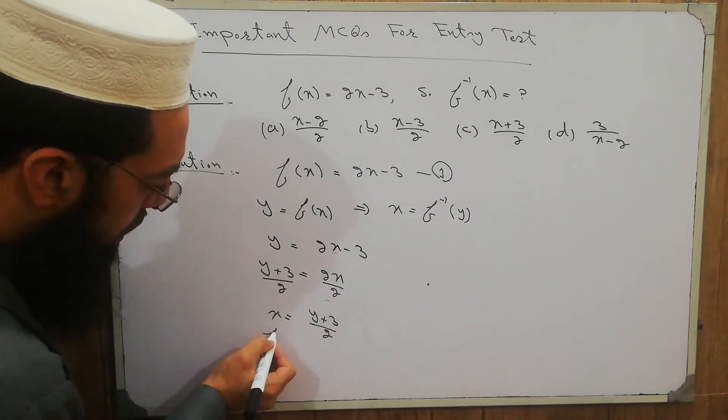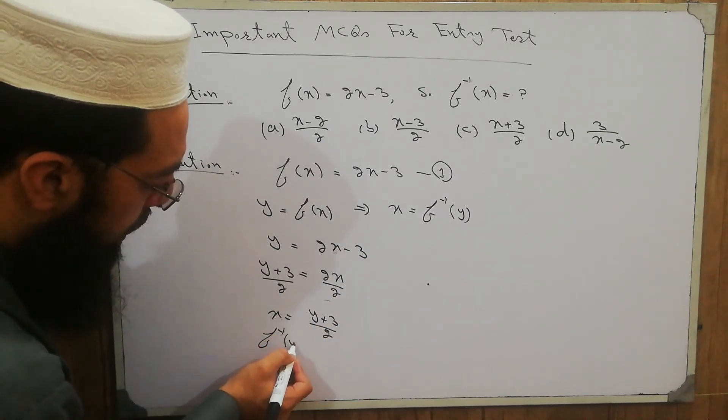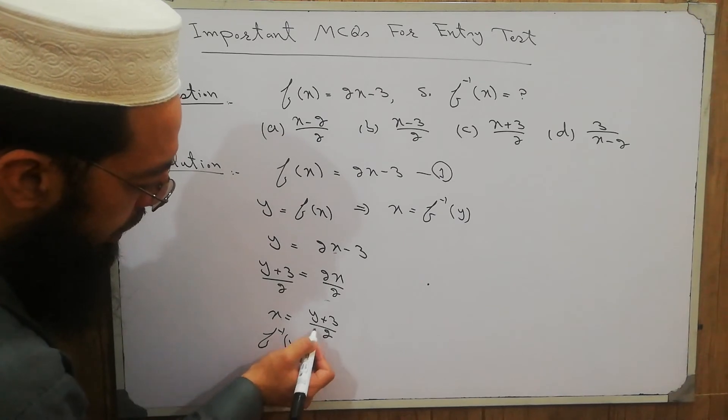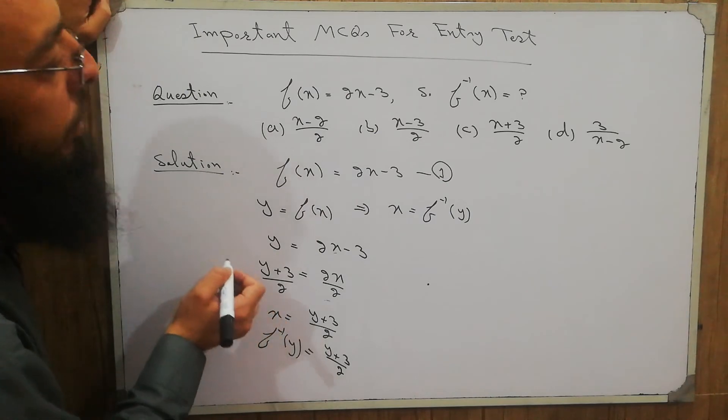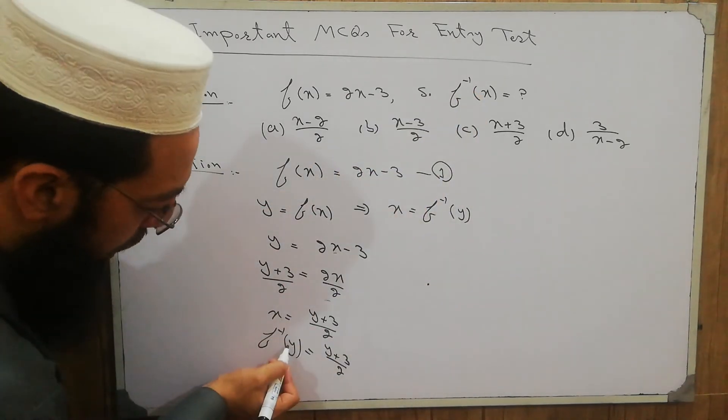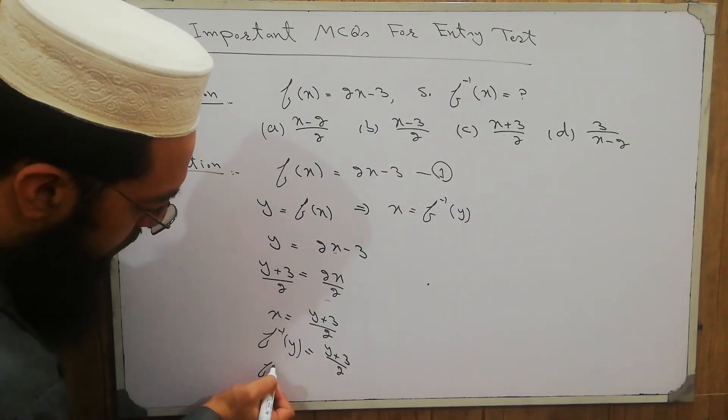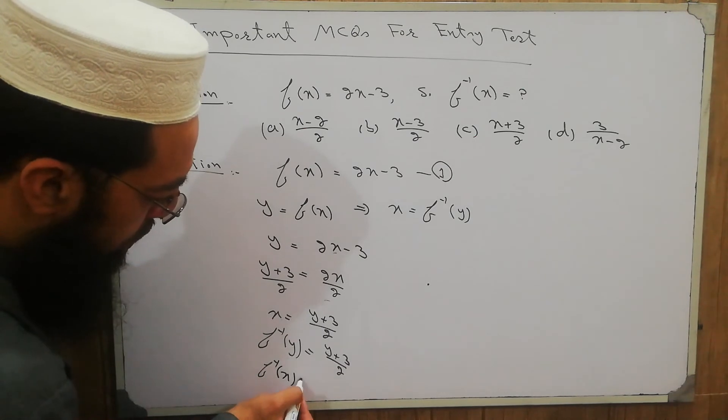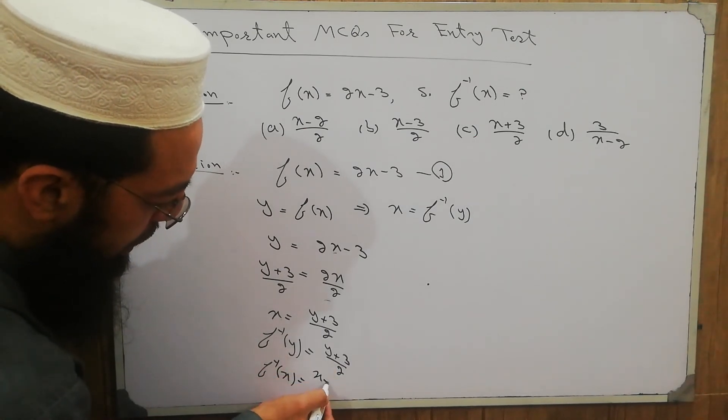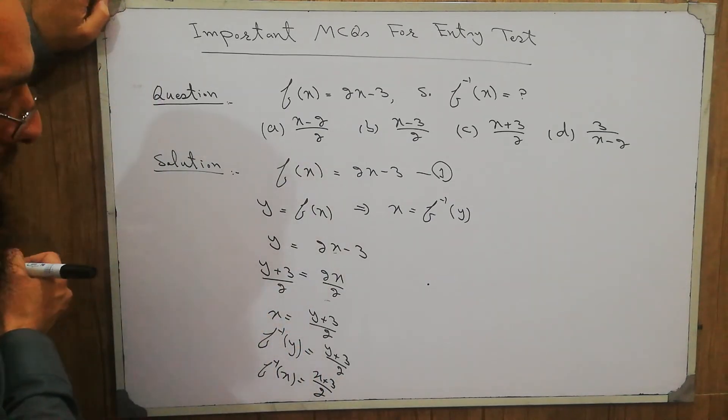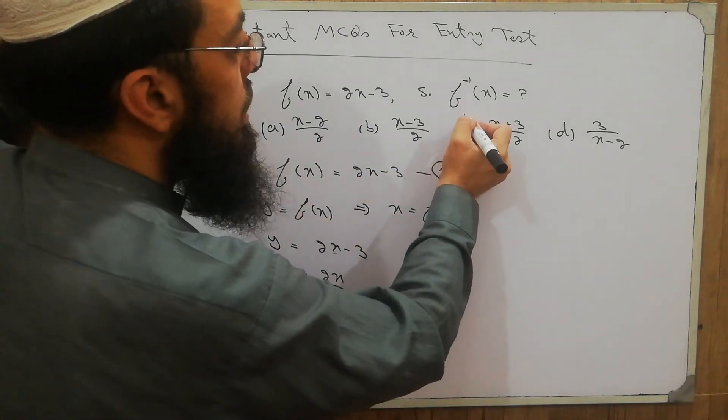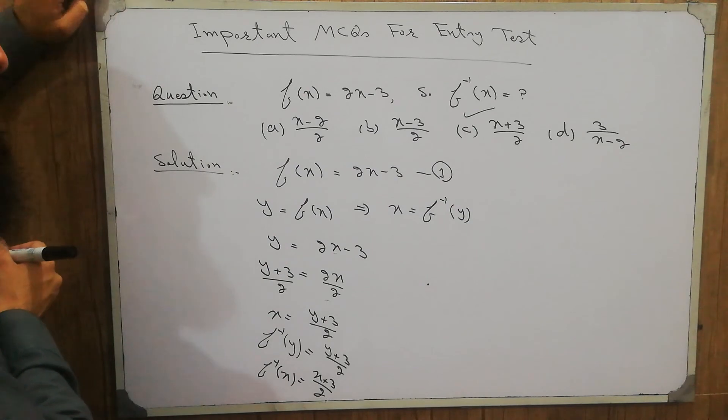So put f inverse of y equals y plus 3 divided by 2. But I need f inverse of x, so put here x. So f inverse of x equals x plus 3 divided by 2. So the correct option is option number C, x plus 3 divided by 2, and the question is solved.